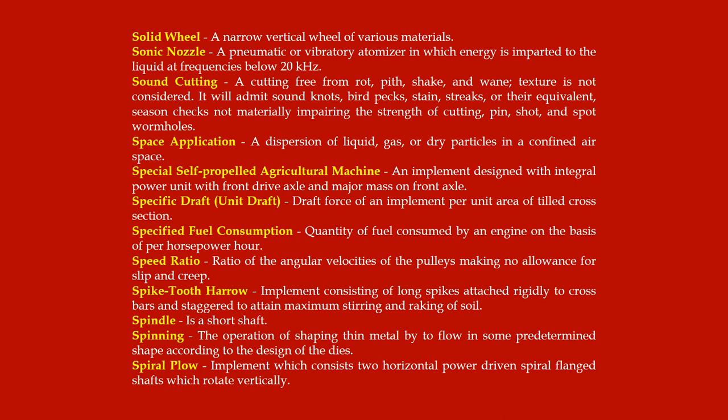Spindle: a short shaft. Spinning: the operation of shaping thin metal to flow in some predetermined shape according to the design of the dies. Spiral plow: an implement which consists of two horizontal power-driven spiral flanged shafts which rotate vertically.